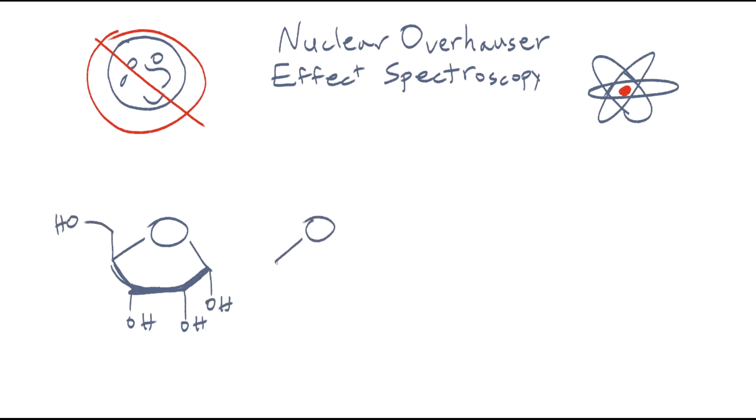For example, say you're studying a molecule that can be arranged in different ways, and you want to know how it's shaped to predict its reactivity. Or maybe you want to know if two different molecules are interacting with each other in a biological system. These are situations where NOSY can be really useful.